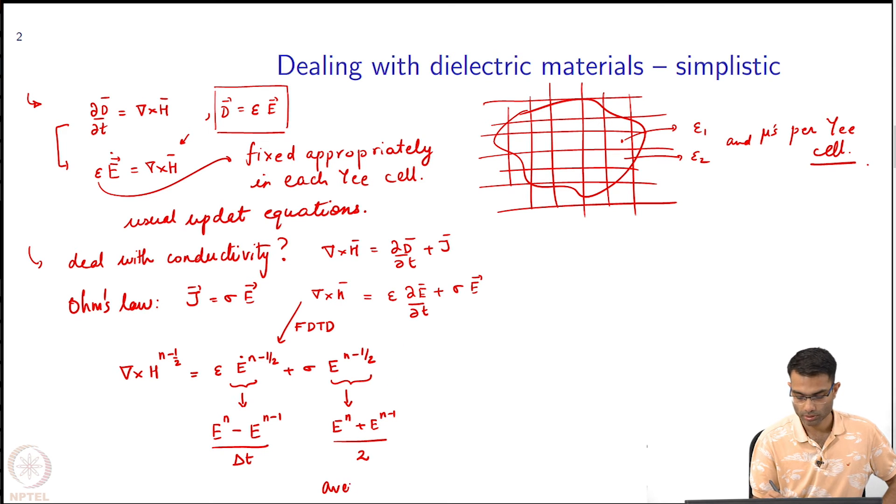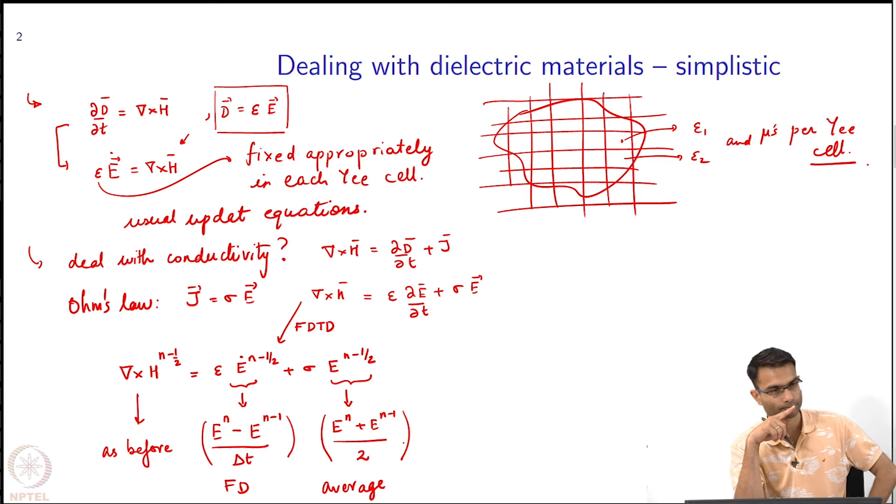This is average, and this is finite difference, and this is as before. This is how you deal with a material that has conductivity.